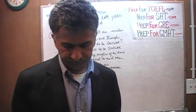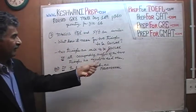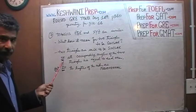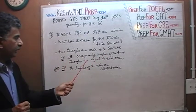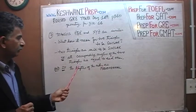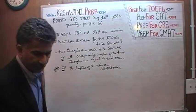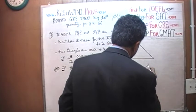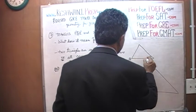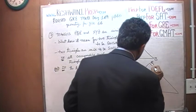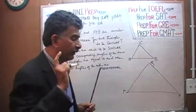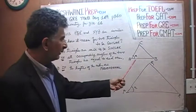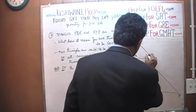Two triangles are said to be similar if two conditions are fulfilled: if all the corresponding angles of the two triangles are equal to each other — all the angles have to be equal. For example, if I draw a triangle here and a bigger one here, and if I tell you that triangle ABC is similar to triangle PQR, what that means right off the bat is that if this is angle A, then so is this one — their measurement is the same, the exact same degrees. This is angle B, so this is also angle B.